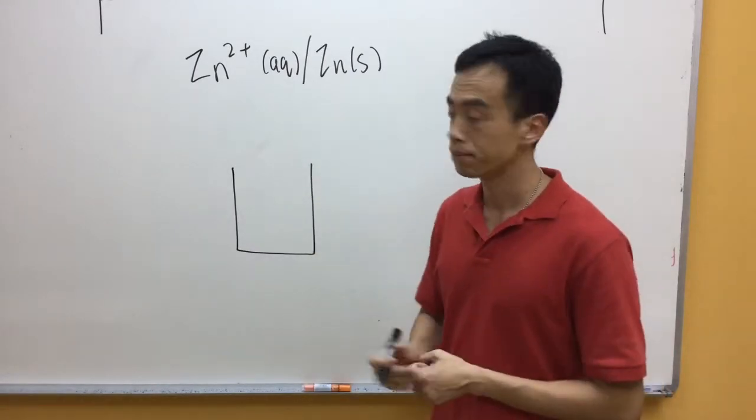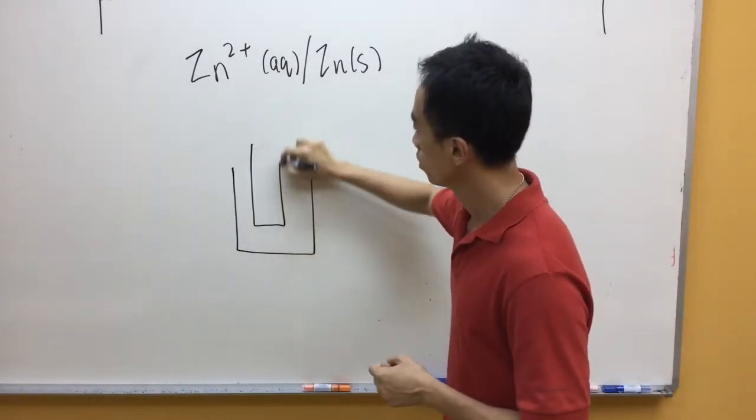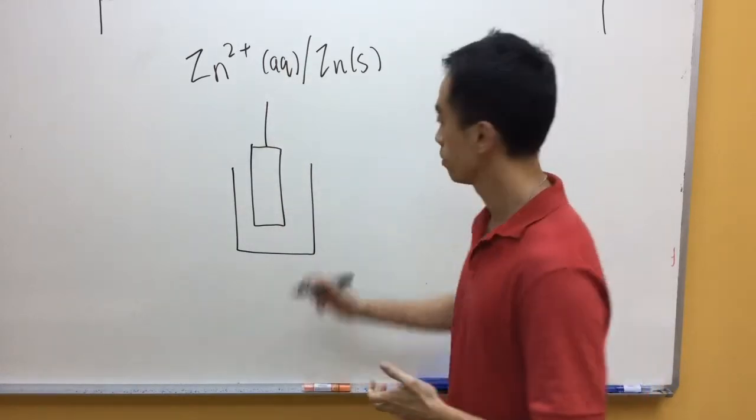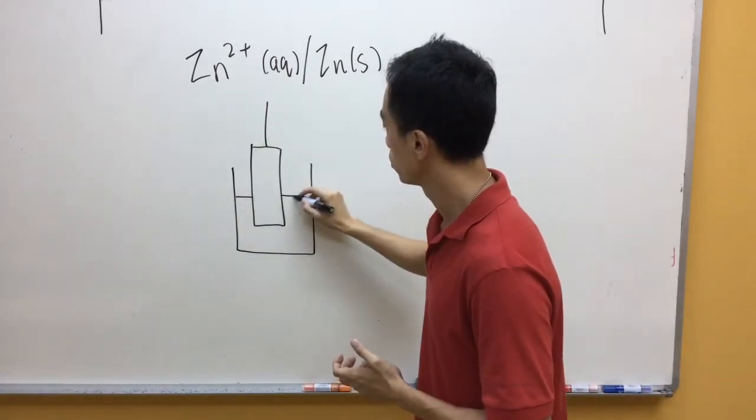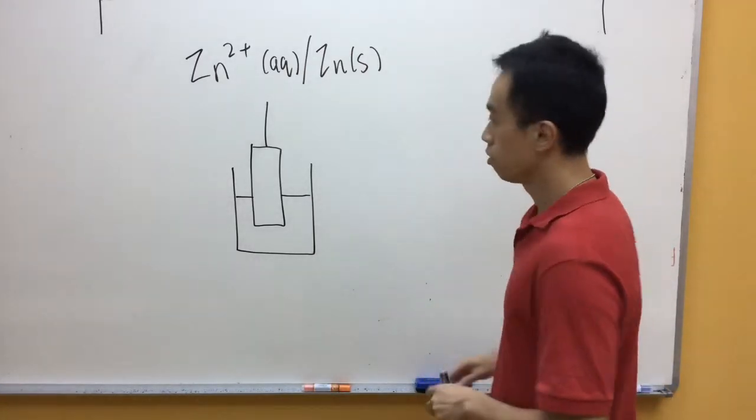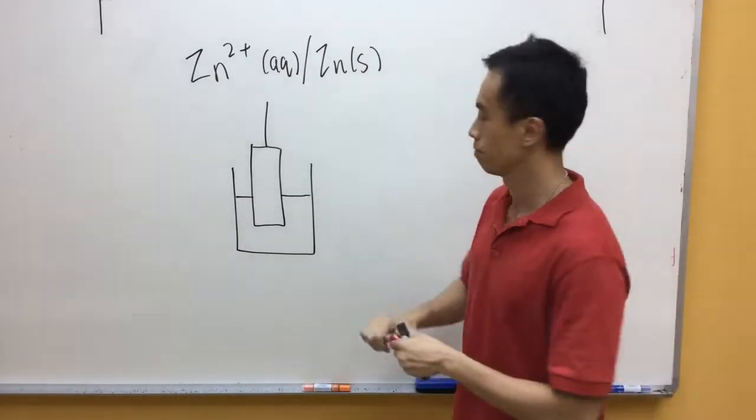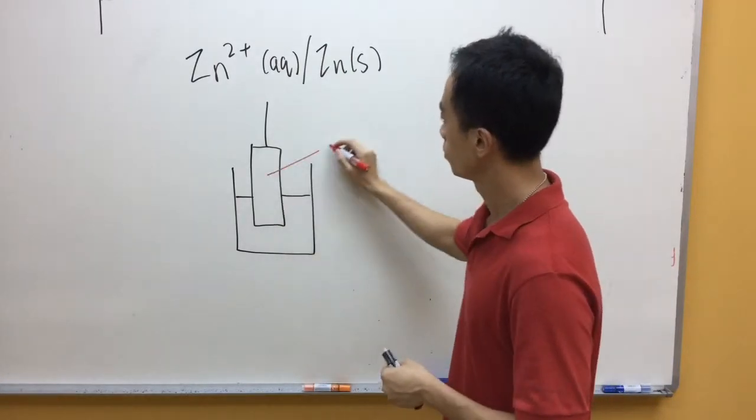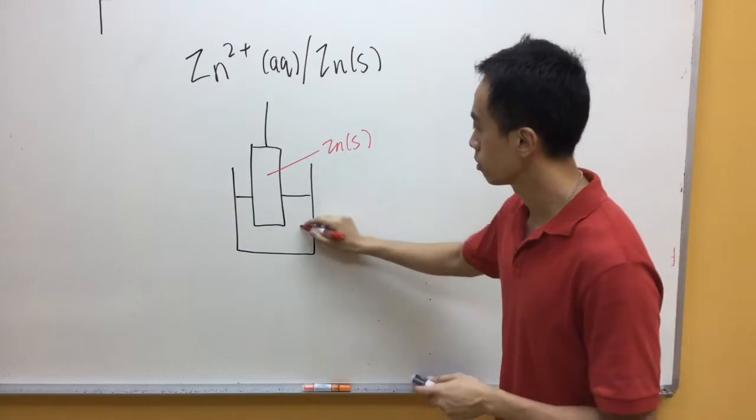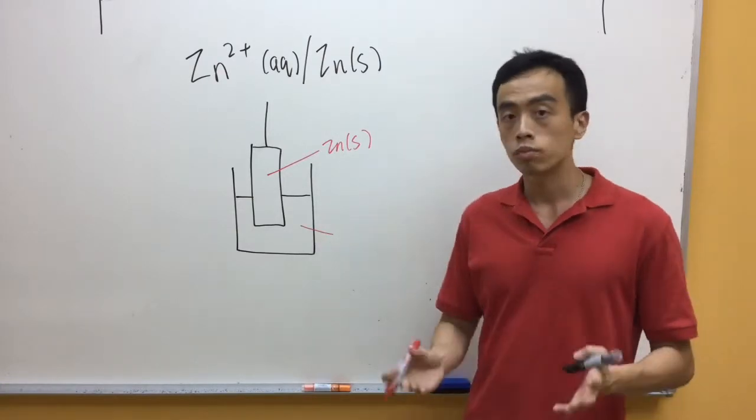Just draw the beaker. I'll draw the metal electrode with the wire. I'll draw the solution. And basically you just need to label my zinc electrode, and then my zinc-2+ solution.